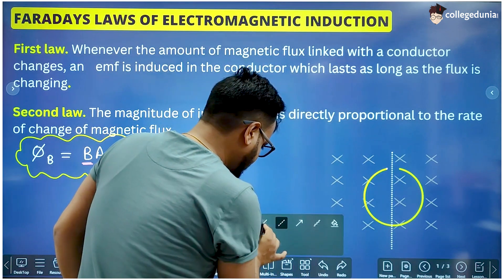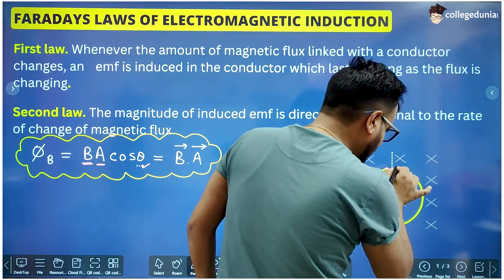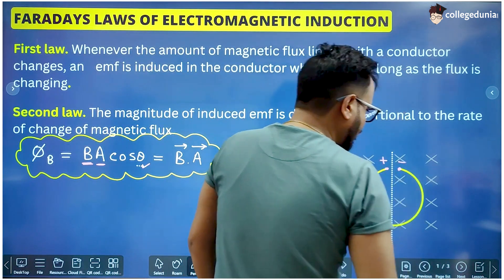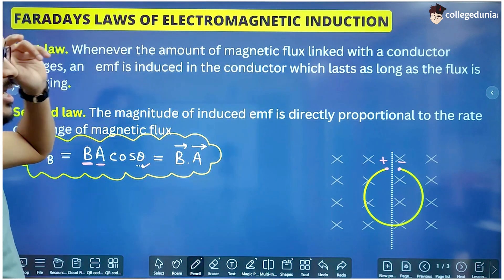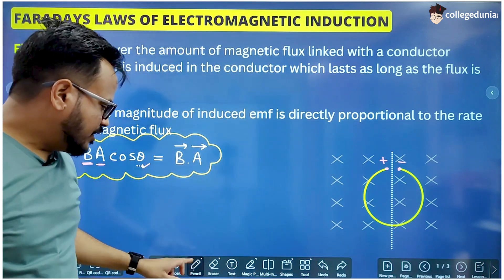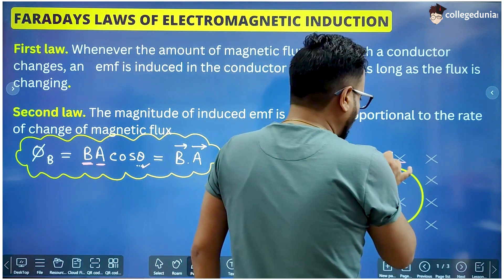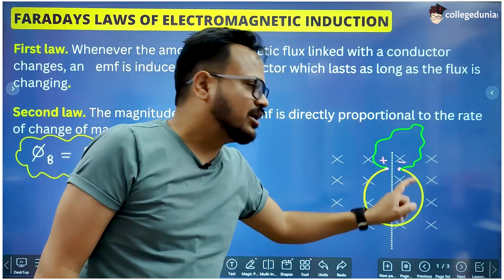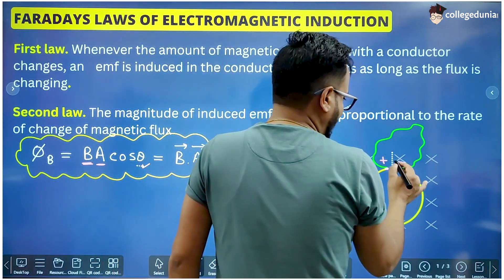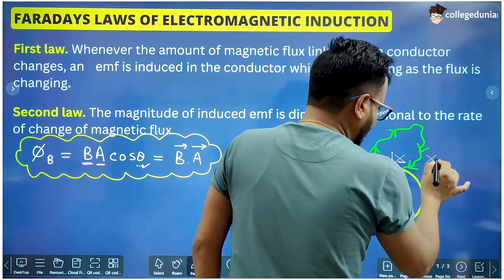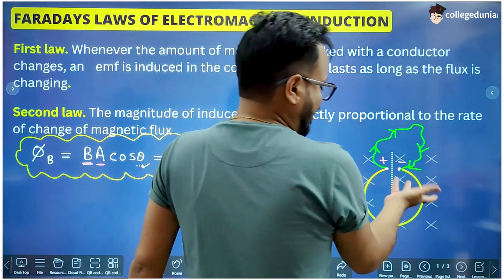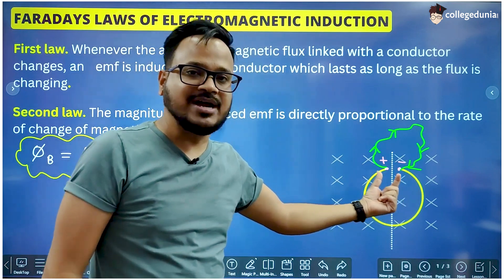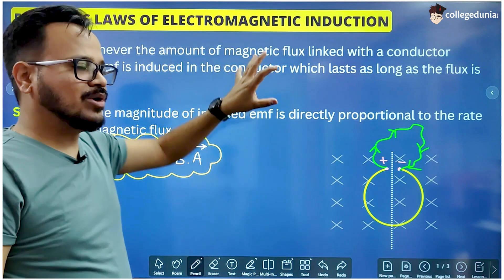An EMF will be induced between these two ends, which means one end will become positively charged and the other negatively charged. This is what the first law says. If you connect these two ends with a conducting wire, a current will flow through that conductor — and this coil behaves like a battery with positive and negative ends. If we stop rotating the coil, the magnetic flux stops changing, so there will be no induced EMF and the current will stop.